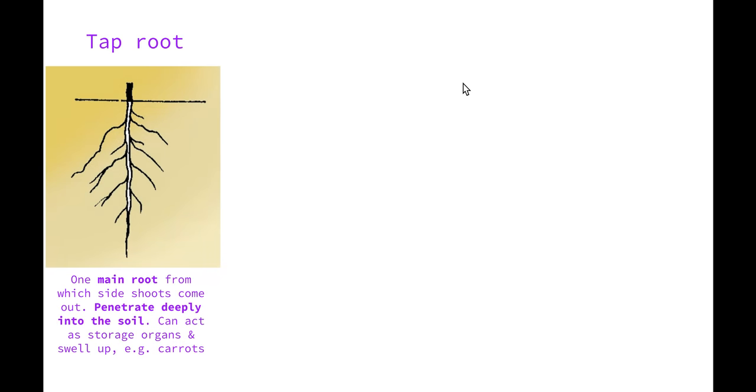Let's have a look at the different types of roots. The first is a tap root, the main root from which the side shoots come out. These roots penetrate deep into the soil and can act as a storage organ and swell up, for example in carrots. When you pull a carrot out of the ground, you see that the orange part has swollen so it contains most of the water and nutrients. However, it will have tiny little hairs coming off it to increase the surface area.